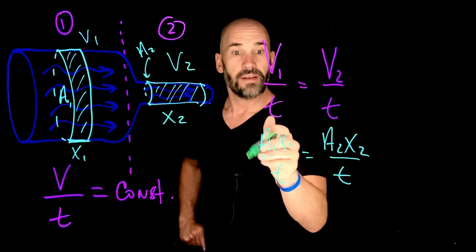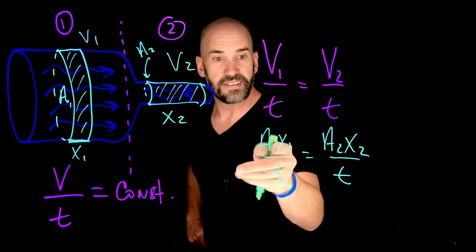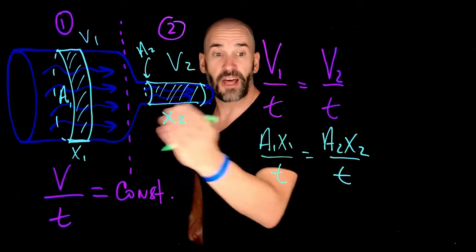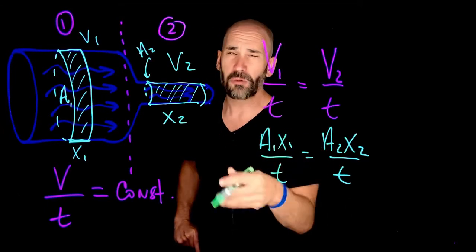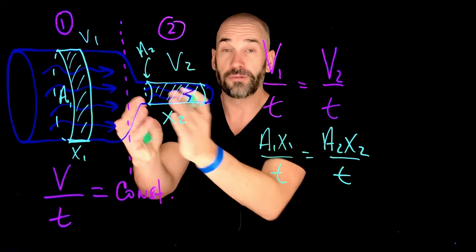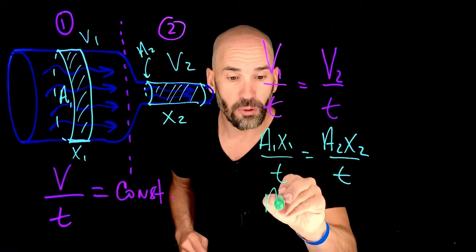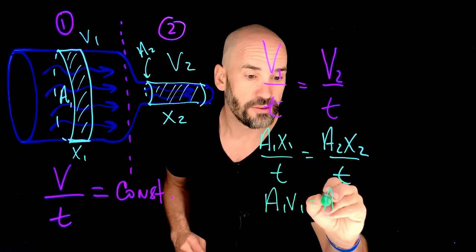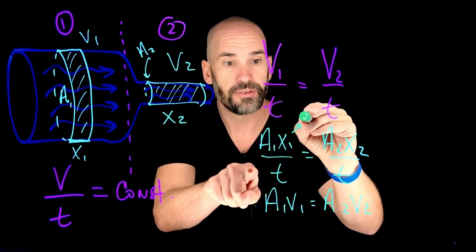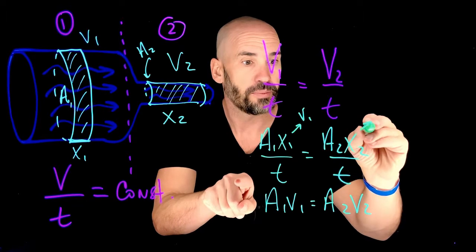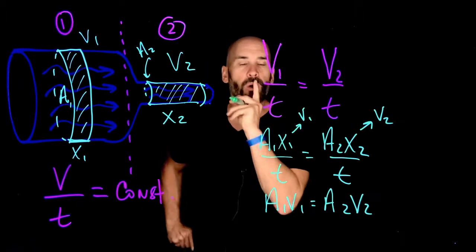So check this out. This distance, this linear distance divided by time, that's just the velocity. So we can replace x1 over t with just the velocity at which the fluid is flowing. So a1 v1 is going to equal a2 v2. This here just becomes v1, and this here becomes v2.